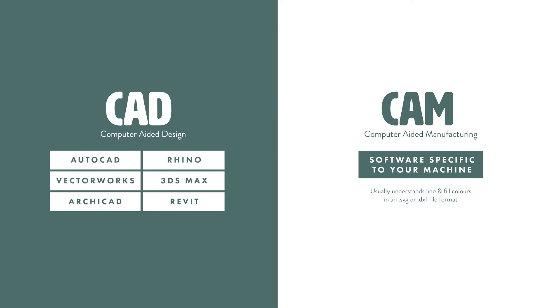Softwares like AutoCAD, Rhino, Vectorworks, 3ds Max, Revit — whatever you're using, this is your CAD software. The next part, and the crucial part for fabrication, is what's called CAM — computer-aided manufacturing.